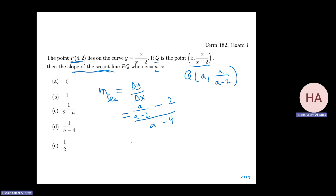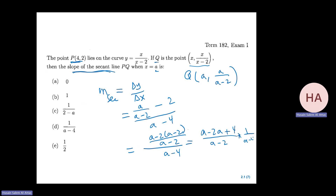The numerator will be A - 2A + 4, over (A-2), times 1/(A-4). That is (4 - A) or -(A-4) over (A-2), times 1/(A-4). The (A-4) cancels, so I have 1/(2-A) as my answer.